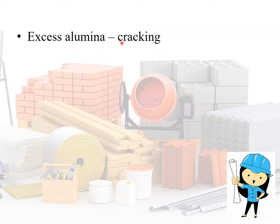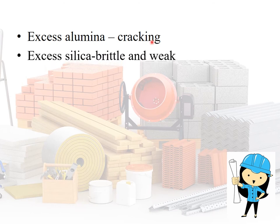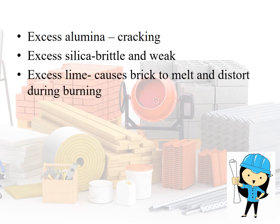Regarding the presence of alumina: bricks should contain 20 to 30% alumina. Excess alumina causes cracking of the brick. Regarding excess silica: silica should be present up to 50 to 60%; more than 60% silica makes the brick brittle and weak. Excess lime causes the brick to melt and distort during burning.